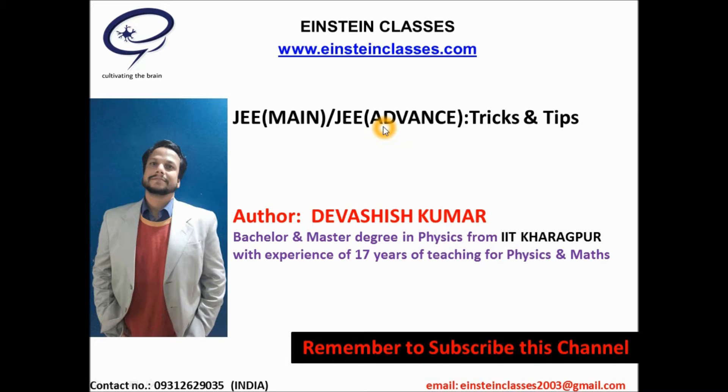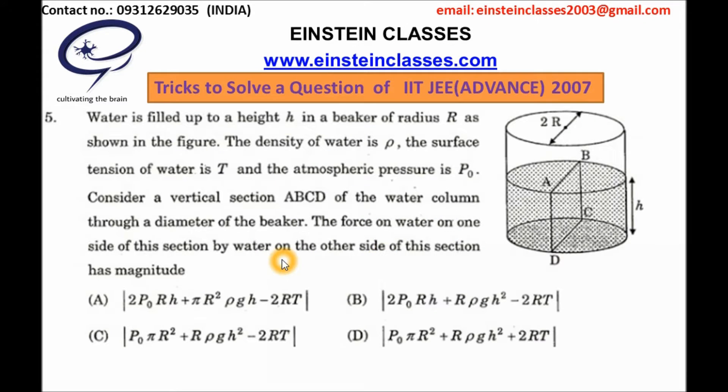We have to find the force on water on one side of this section by water on the other side of this section, and the section is ABCD. What you can see, the atmospheric pressure at each point will be P note.